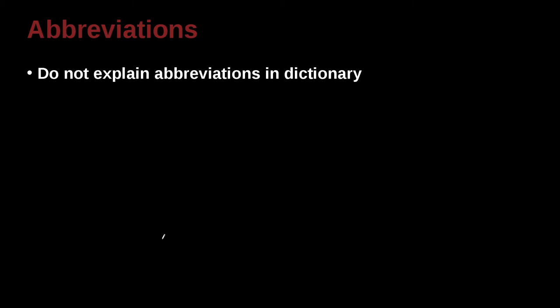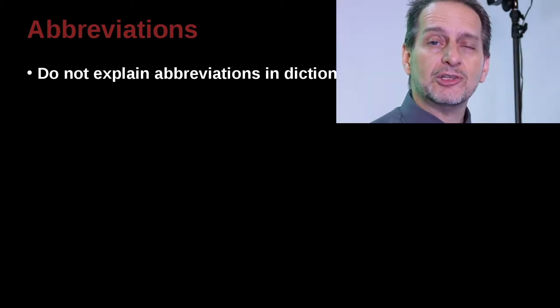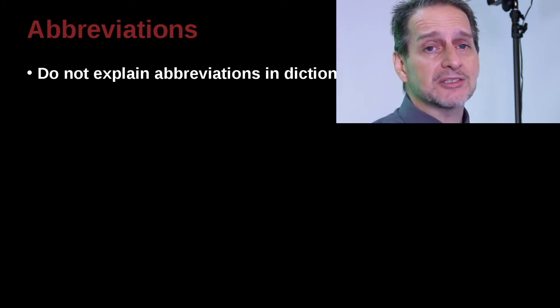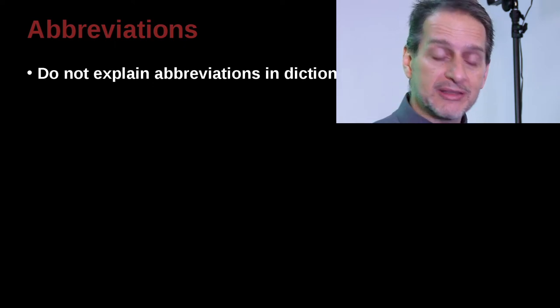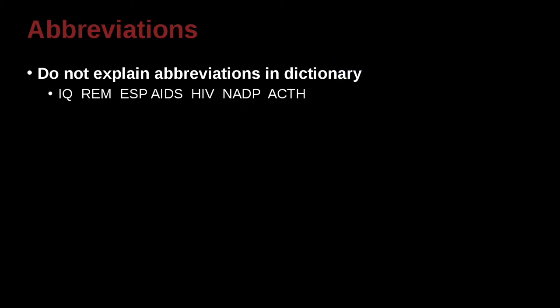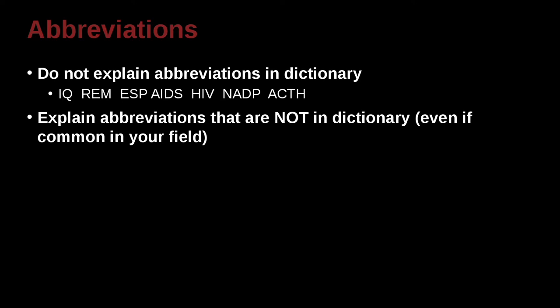Do not explain abbreviations that are in the dictionary. This is an interesting kind of rule of thumb that is a little bit confusing. What we're saying is there are many abbreviations in science and in your area that are very, very common. You don't need to explain those and then use parentheses. You can just use them. So for example, IQ. If you're writing a paper and you use IQ, you do not need to the first time say intelligence quotient. You don't need to write that the first time. REM, rapid eye movement. You don't need to write that. ESP, extrasensory perception, but you don't need to do that. Just use the abbreviation without explaining it because they're in the dictionary.